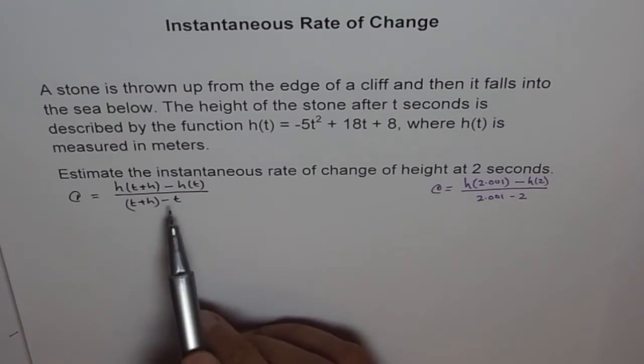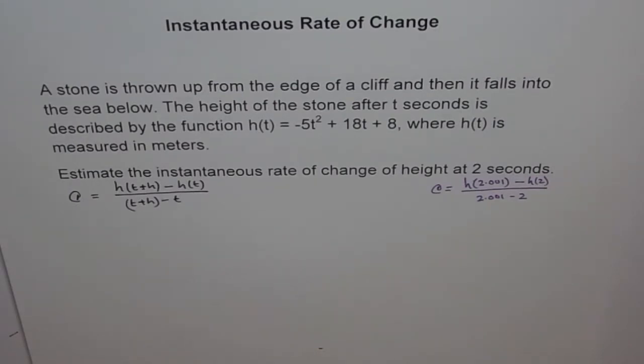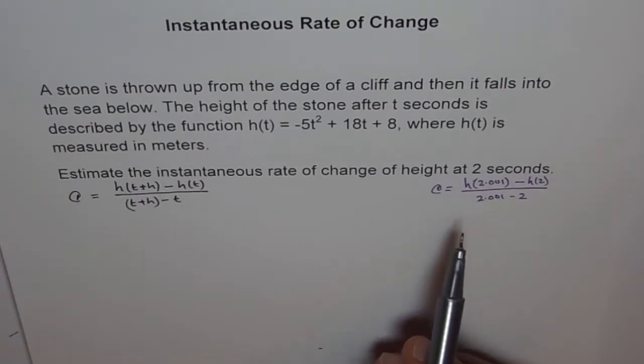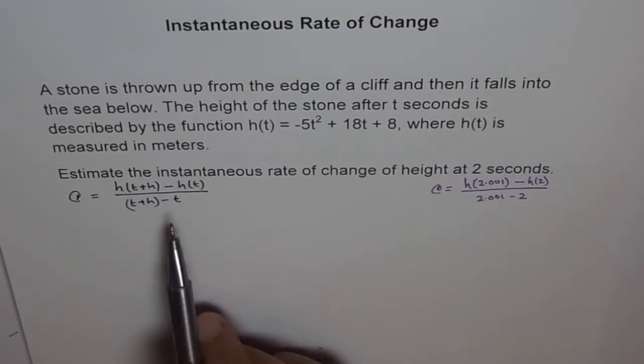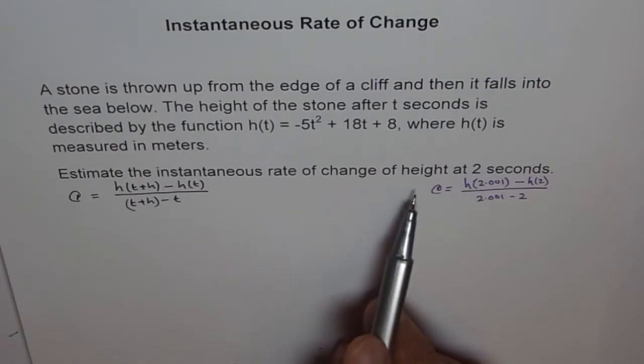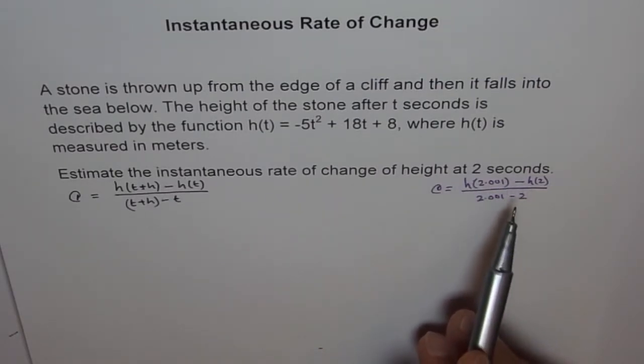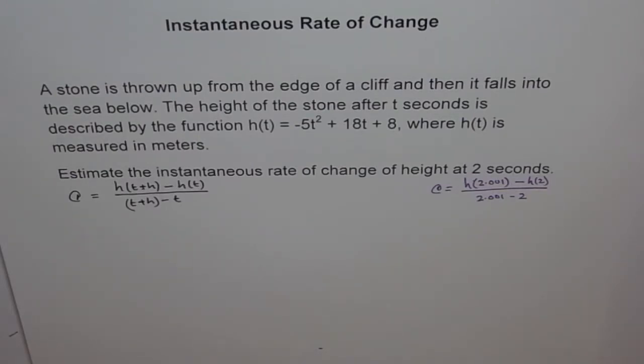This is called difference quotient method. So, we will use this method and show you how to get the result. Advantage of this is that you could find instantaneous rate of change of height at 2 seconds, 3 seconds, 4 seconds. It becomes versatile and easy to use. So, that is what we will try to get here now.